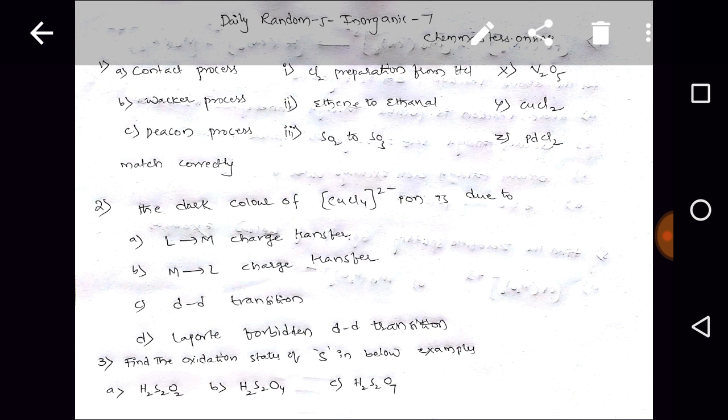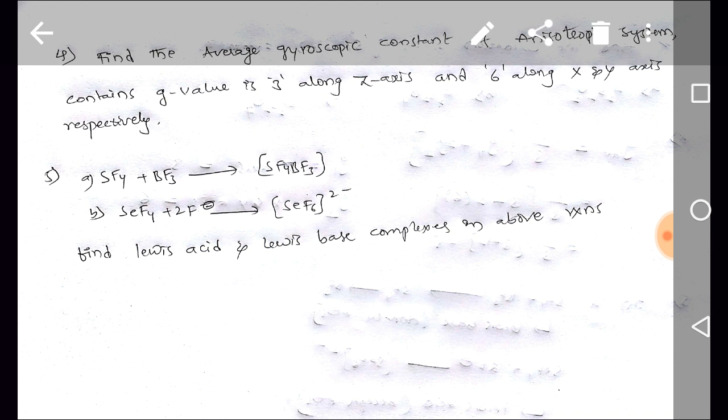Fourth question: find the average gyroscopic constant of anisotropic system contains g value is 3 along z-axis and 6 along x and y axis respectively. So we need to find average gyroscopic constant of anisotropic system.